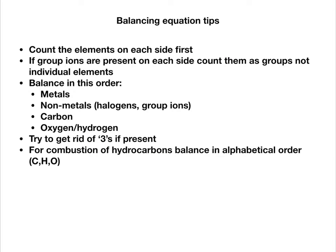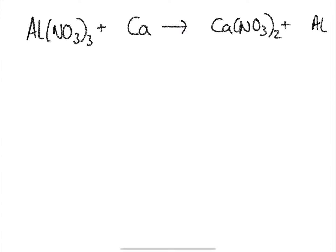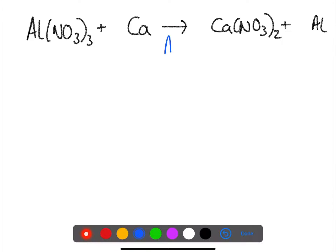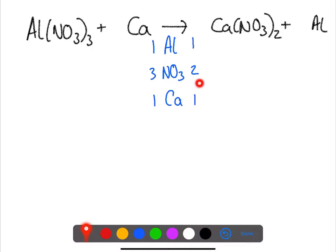Let's have a look at a practice example. Start by writing the element symbols underneath the arrow. We're going to keep the NO₃ as a group because it does not change on either side. You then count up how many of each element you have. At this point we need to check for balance — we check the metals first and they are already balanced, so then we have a look at the non-metals and group ions.